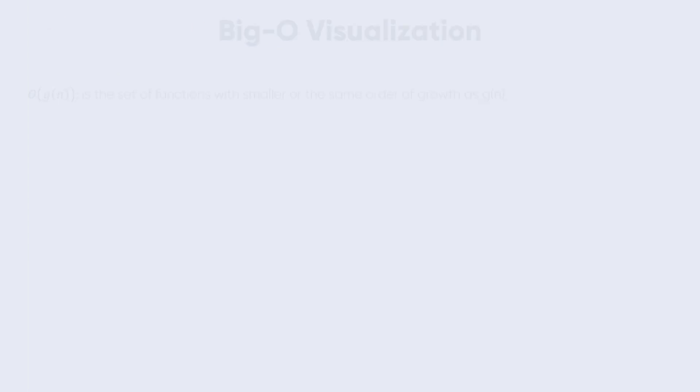Big O visualization: O(g(n)) is the set of functions with the smaller or the same order of growth as g(n).